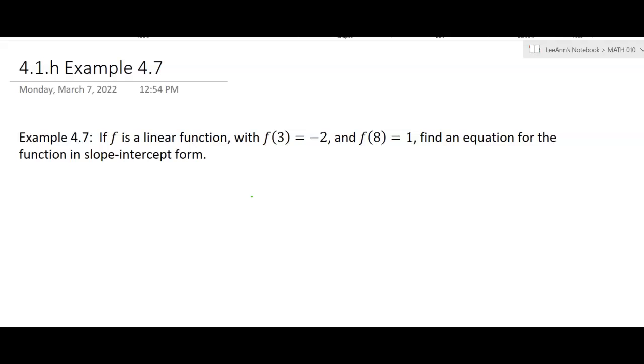Okay, so apparently I missed a problem on the worksheet there, on your guided note page. So I'm doing it now, this is example 4.7. It says if f is a linear function, and then it gives us some information there, it's actually an ordered pair, and then another one there, find an equation for the function in slope-intercept form. So we still want to find the equation of the function.